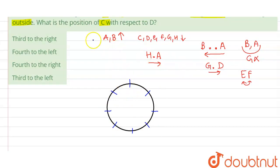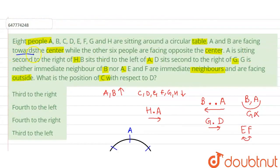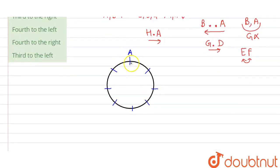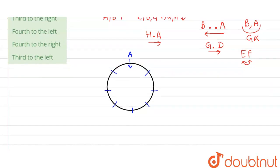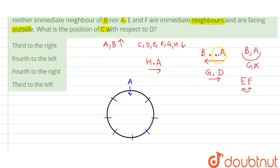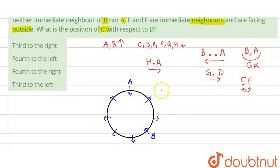First of all, let's place A. A is here on the diagram, facing towards the center — so A is inward. B is third to the left of A: A's first left, second left, third left is B. B is also facing towards the center. The remaining persons are facing outside. G cannot be placed next to B or A — so G cannot go in those adjacent positions.